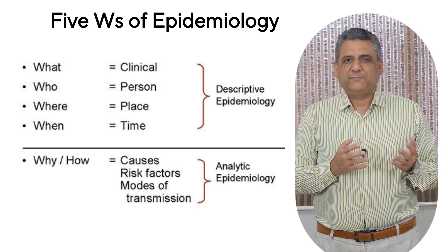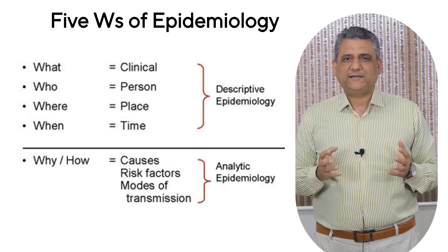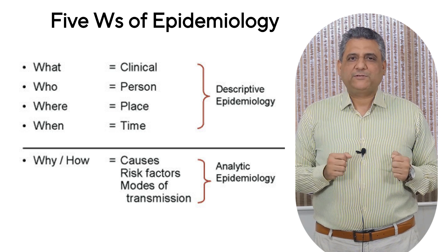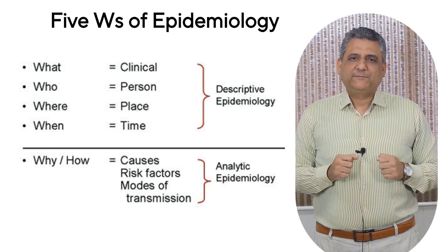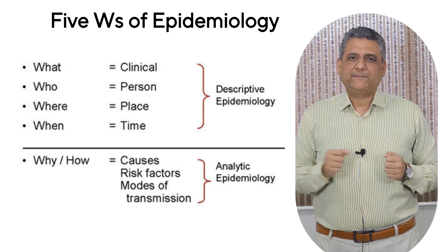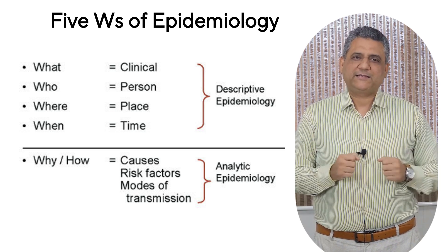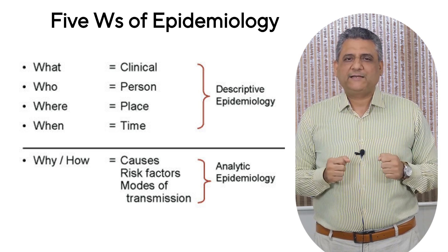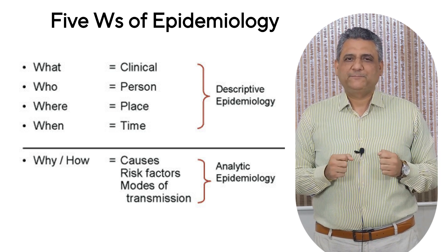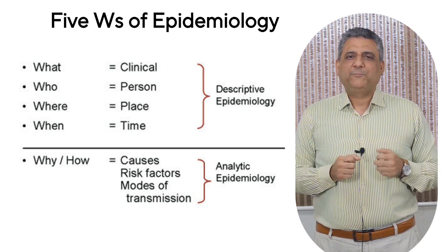When you think about the core of epidemiology, remember the five W's — a simple way to frame every investigation: who, what, when, where, and why. What is the disease or health outcome we're studying? It defines the health event itself. Who is affected? This tells us which population groups are at risk. When did it occur? That's the time pattern showing trends and outbreaks. Where did it happen? The place component helps us spot clusters and geographic variations. And finally, why — or sometimes how — which uncovers the determinants or causes behind the patterns we observe. A good way to remember this is to think of yourself as a health detective, using these five W's to piece together the full story.